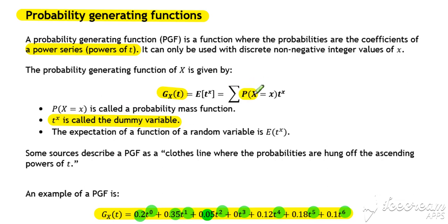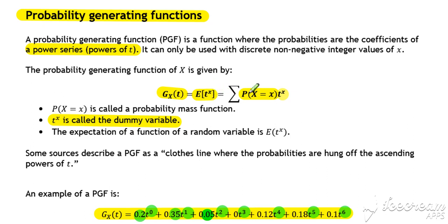The general definition of a probability generating function is: the probabilities that x can take, multiplied by t to the power of x — t being just a dummy variable, and x representing the different values that the discrete random variable can take. It could also be written as the expectation of t to the x, since the expected value is always equal to the probability times that value, and in this case the values are t to the x. So the expected value of t to the x is an alternative way of thinking about our probability generating function.